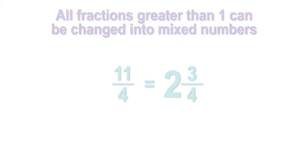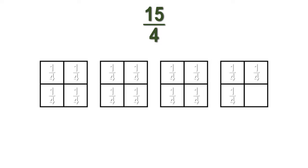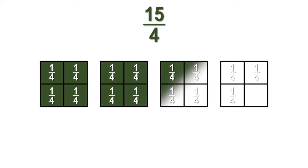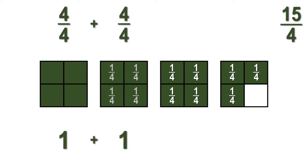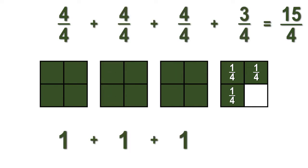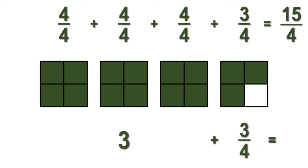Let's demonstrate. Given the fraction fifteen fourths, we can model and partition wholes into fourths. Then each one fourth can be shaded in until a total of fifteen fourths are shaded. Each four fourths is equivalent to one whole, so we can pull out groups of four fourths to represent each whole number. We have three fourths left over, and we can write them as one fourth plus one fourth plus one fourth.